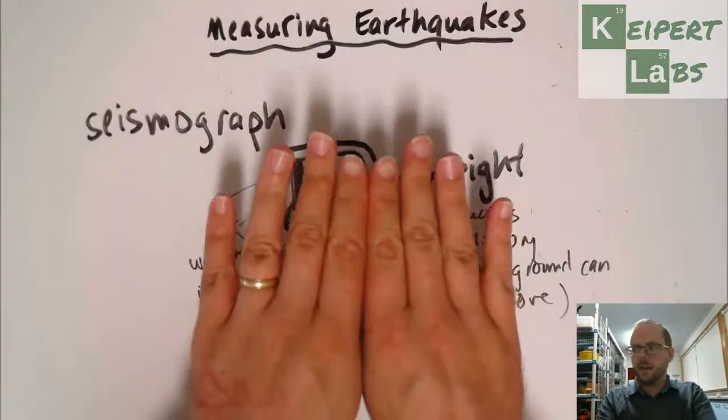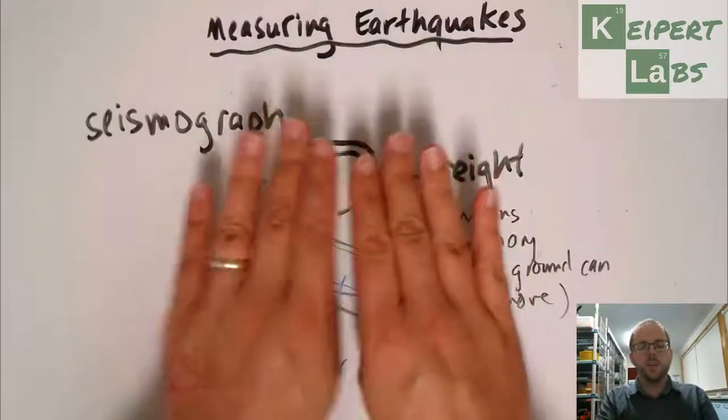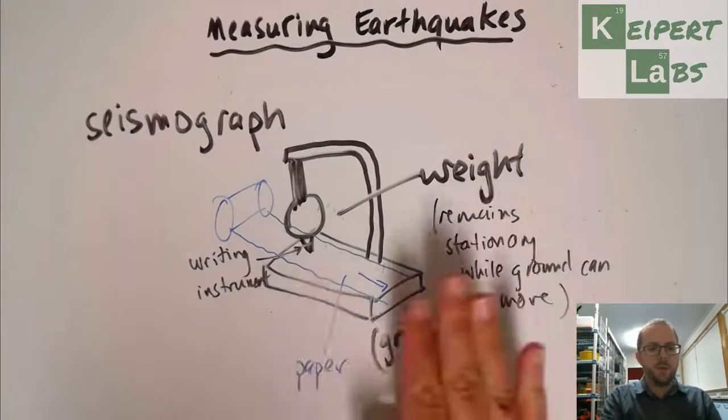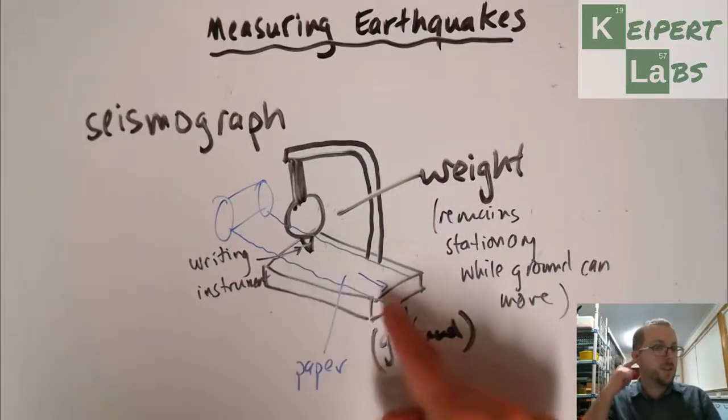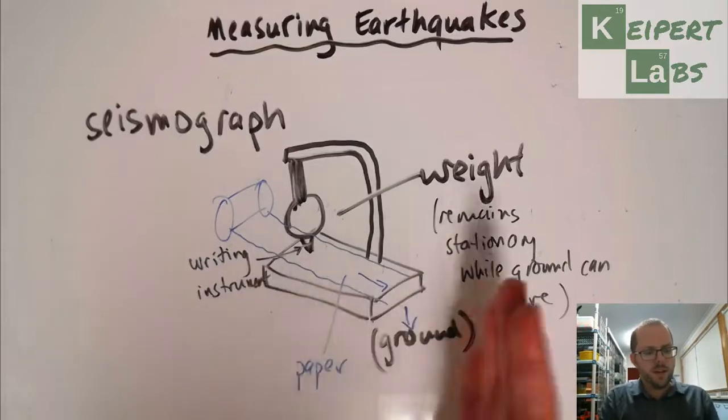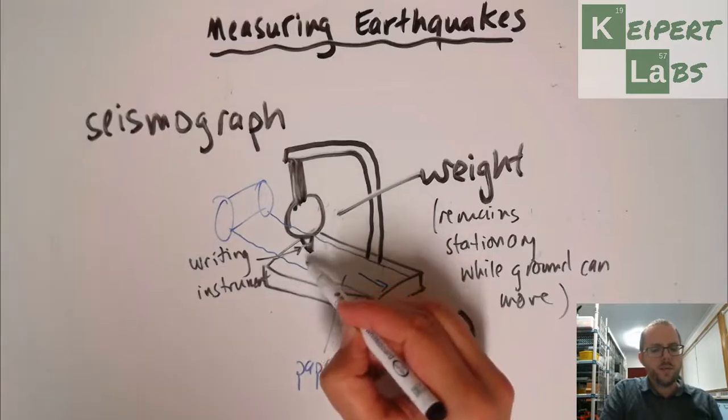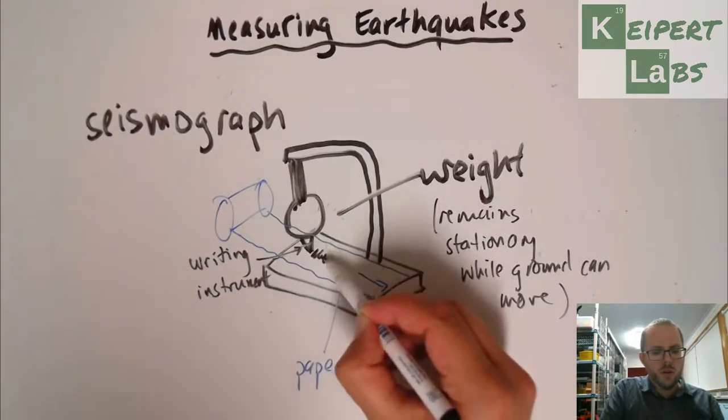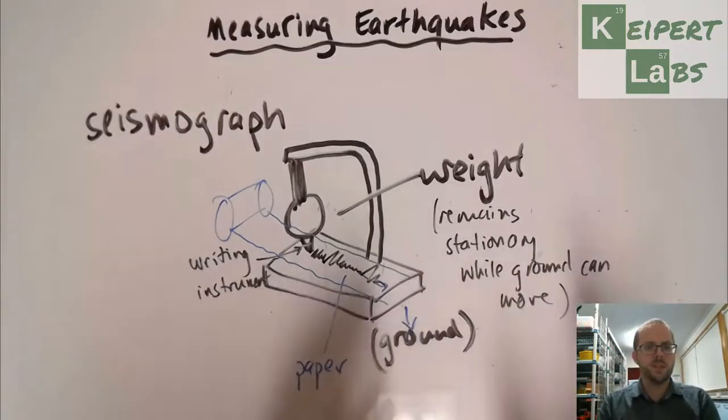If the ground is moving from side to side or up and down, depending on the type of earthquake wave, this base will move with the ground, but this weight will stay still. This paper that's attached to the base will move from side to side as the earth is vibrating. This writing instrument will trace a line on the bit of paper, and as it moves, it will draw these squiggly patterns on the paper as it feeds through, as the paper is shifting from side to side.